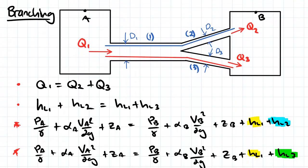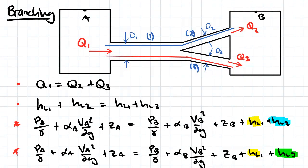And lastly, we've got branching. So in this case here, we've got a flow entering and exiting from point A into one pipe and then splitting up into two different pipes.